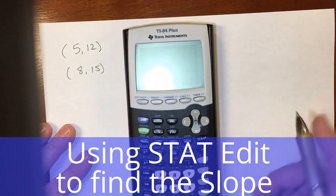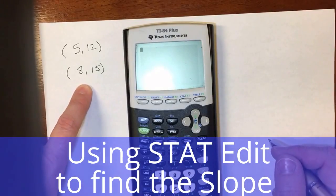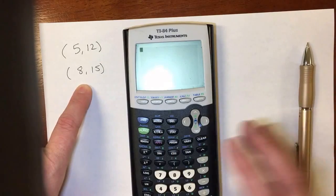All right, my calculator can help me find the slope of the line. So if I just have ordered pairs, I can use the calculator to find the slope.